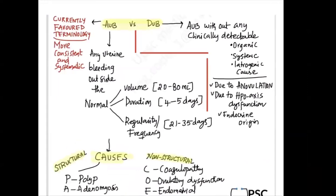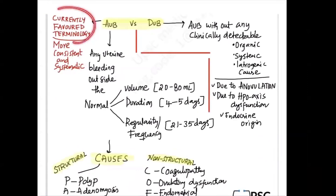As per Dutta's latest edition, the currently favored terminology in the Indian gynecological field is AUB or abnormal uterine bleeding. Any uterine bleeding, irrespective of the cause, if it is not normal. So what is normal uterine bleeding during menses? Volume is 20 to 80 ml.